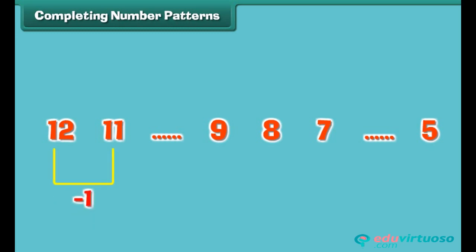Completing number patterns. Look at this number pattern. There are two numbers missing in the pattern. We can fill them if we understand how the pattern has been created. It is clear that in this pattern, numbers decrease by one at a time.